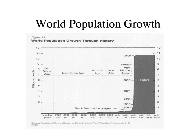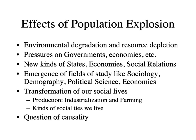This tells us something huge about the transformation of populations. The effects of that population explosion have been environmental degradation and resource depletion — the environmental crisis we face today is partially a consequence of that explosion. It leads to the formation of new kinds of governments and economies, and has been associated with entire new fields of study like sociology, demography, economics, political science, and anthropology. It's part of a transformation of productive processes like industrialization and the industrialization of farming, and has fundamentally changed the structure of our social ties.